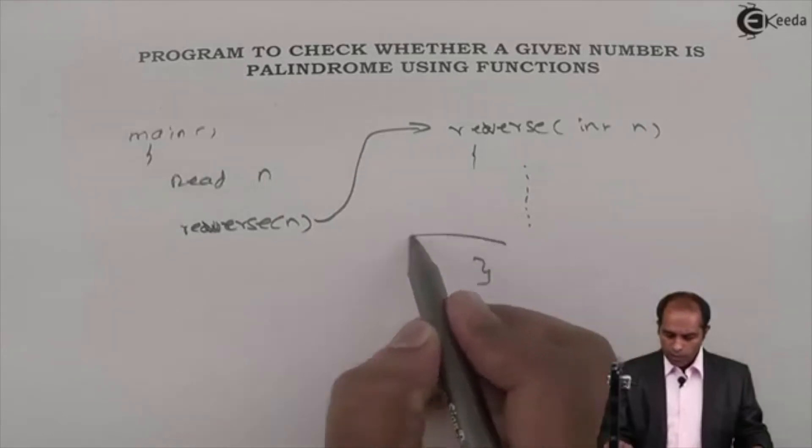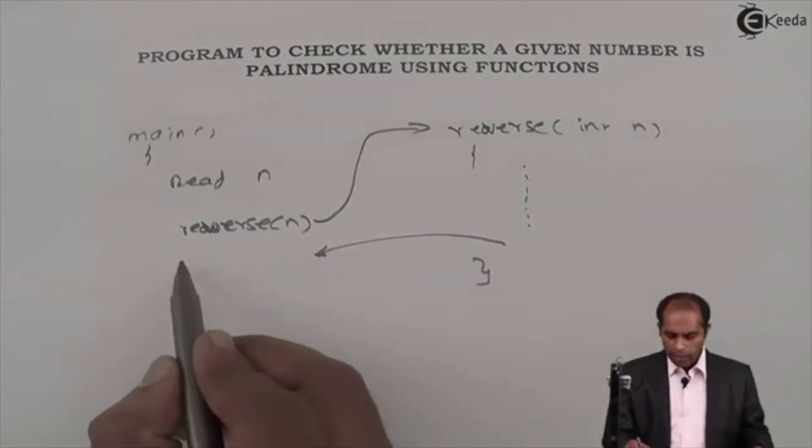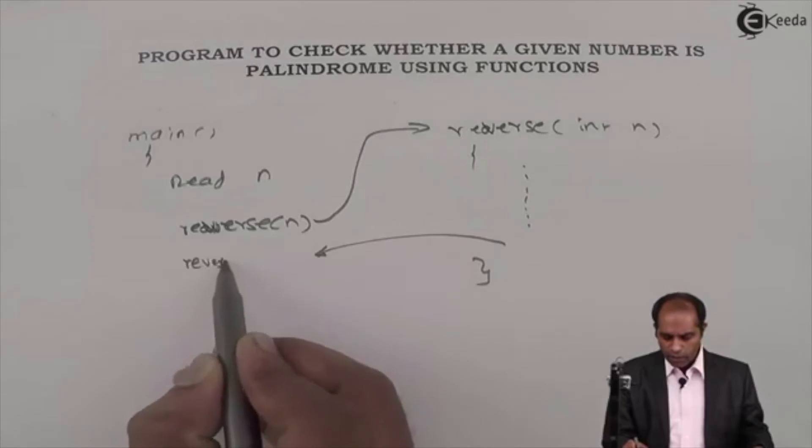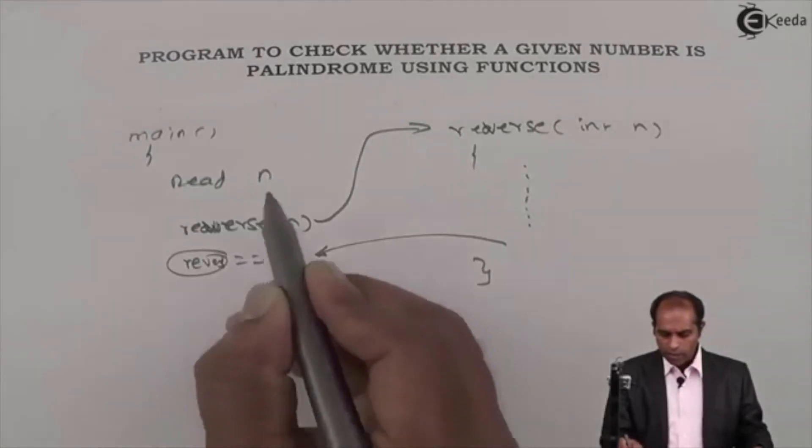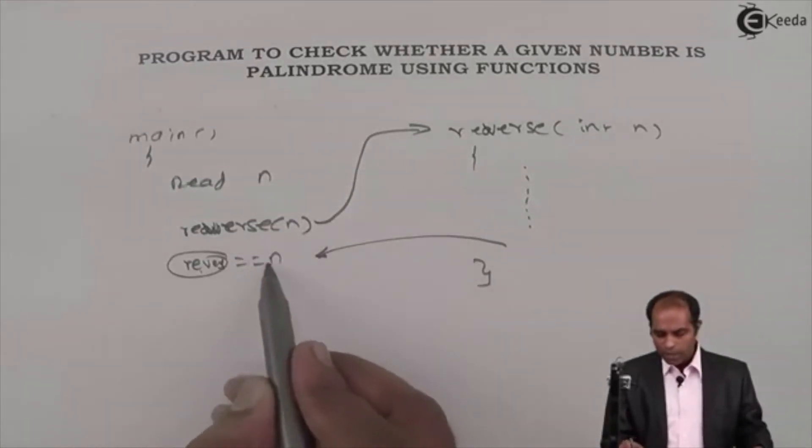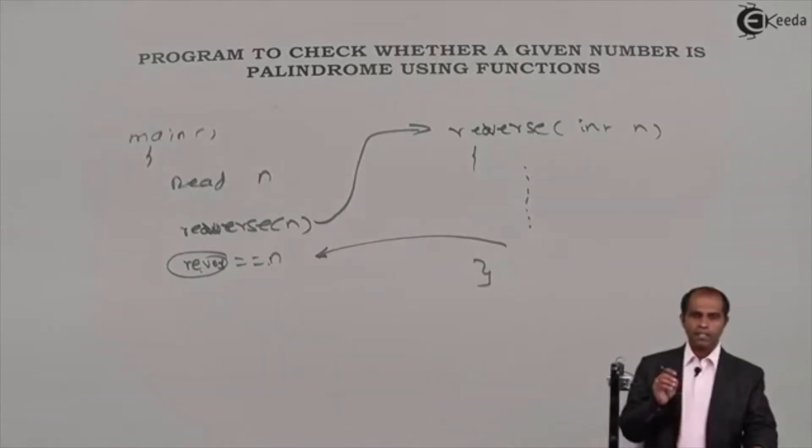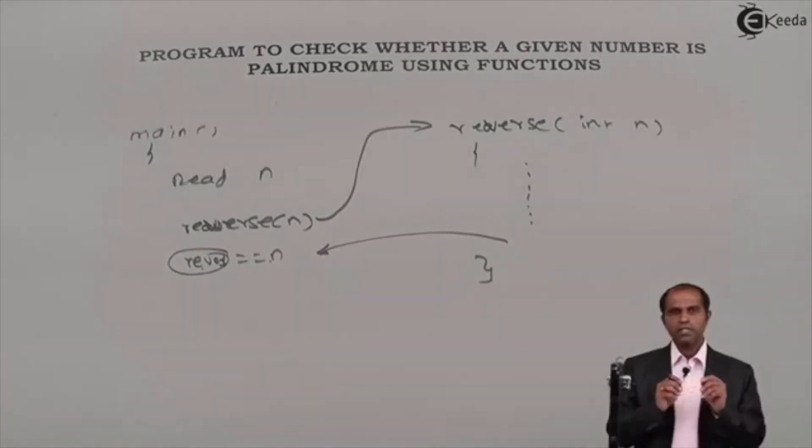So the reverse has to be taken back to the main and in my main I am supposed to compare the reverse with the number that is n. If reverse matches with n then I will say the number as palindrome. If the reverse does not match with n then we say number is not a palindrome. Simple task to do.